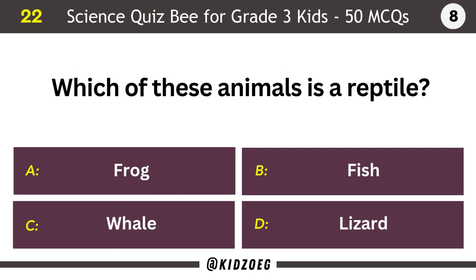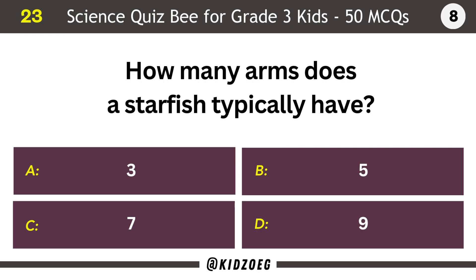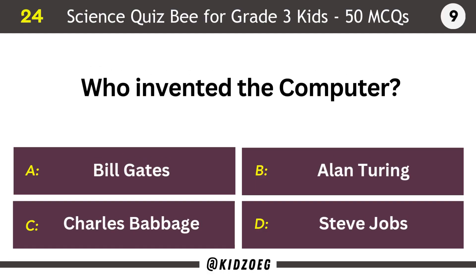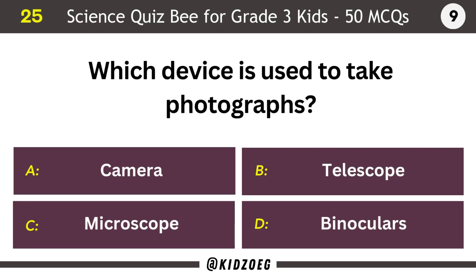Which of these animals is a reptile? Lizard. How many arms does a starfish typically have? Five. Who invented the computer? Charles Babbage. Which device is used to take photographs? Camera.